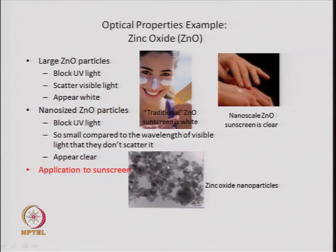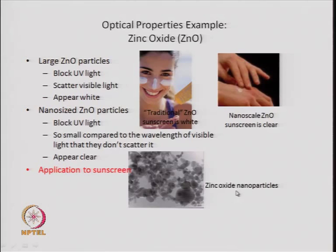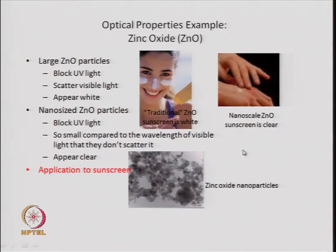Zinc oxide is a very important material and there has been tremendous research on it. One of the applications of nano-size zinc oxide is in sunscreens or lotions. This TEM picture shows zinc oxide nanoparticles present in a stable suspension or emulsion, designed so they do not precipitate out. The particle size is such that it should not settle to the bottom, and such material is in high demand for sunscreens.